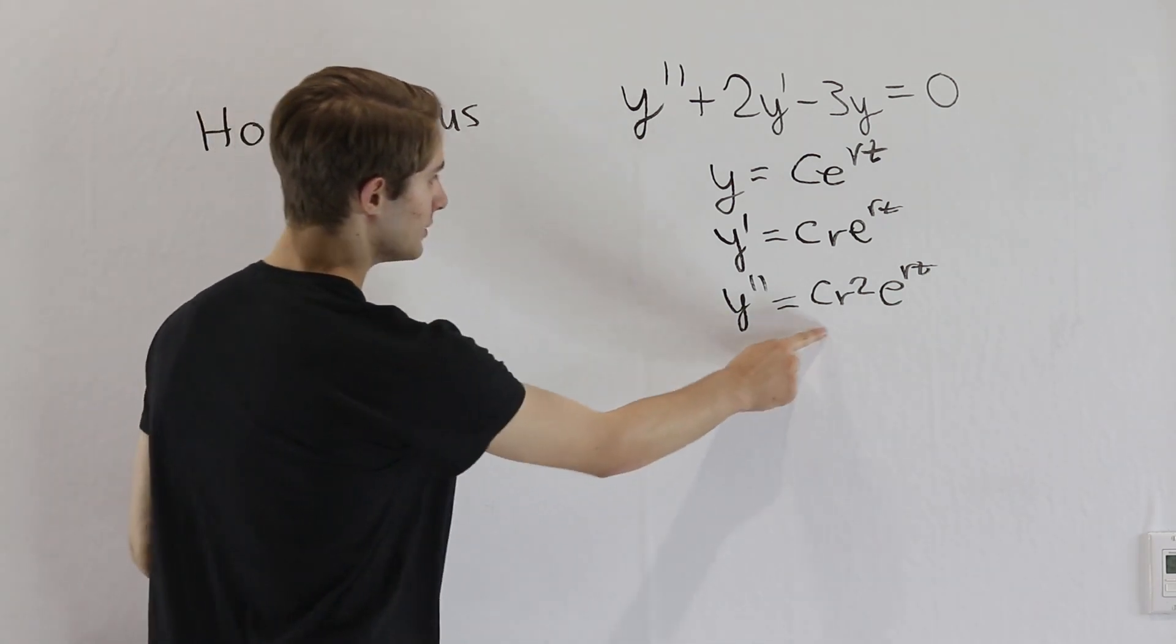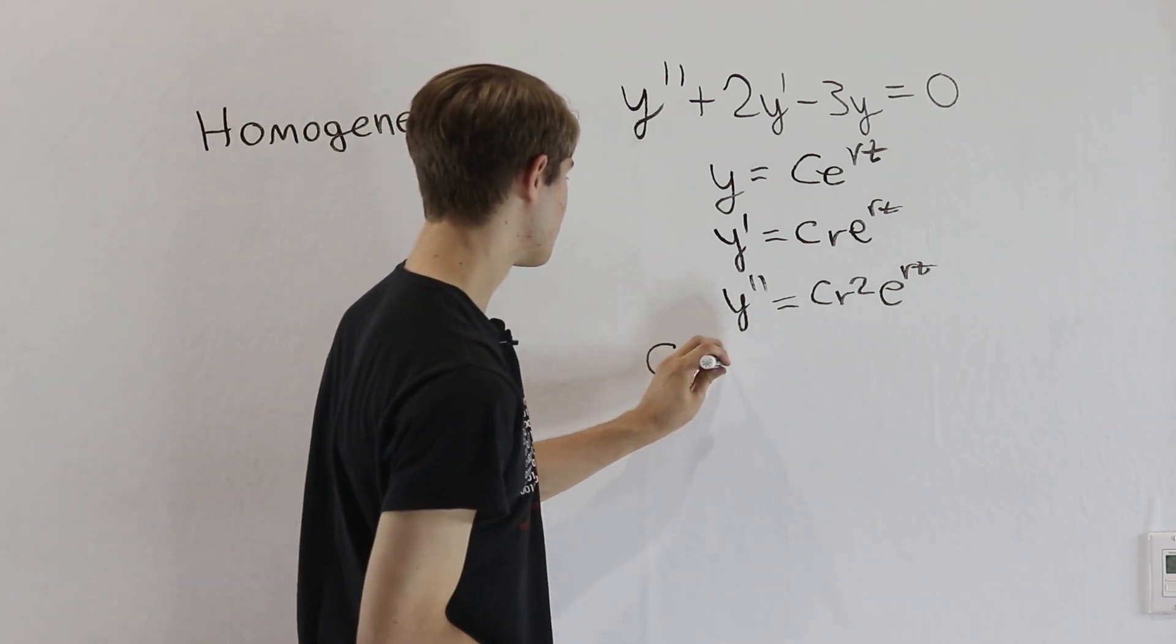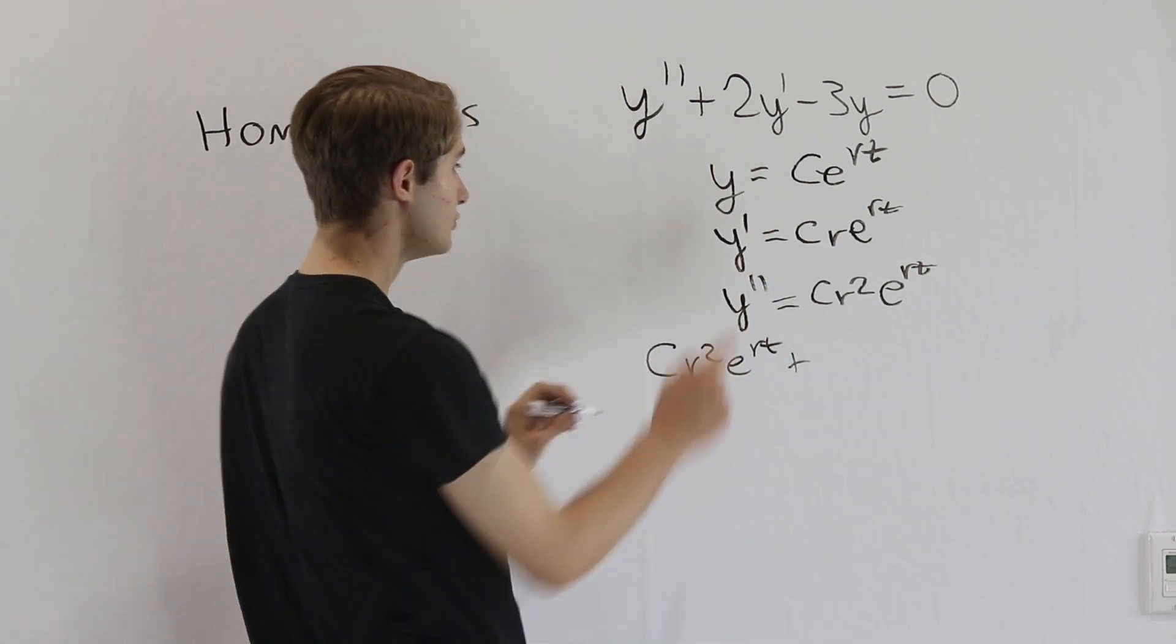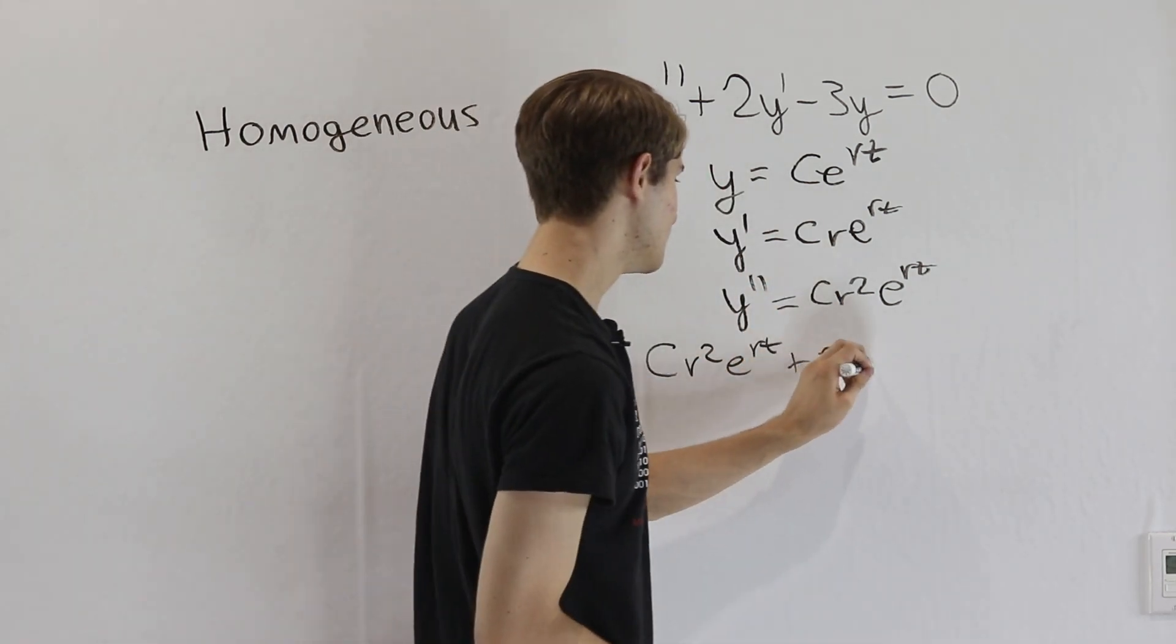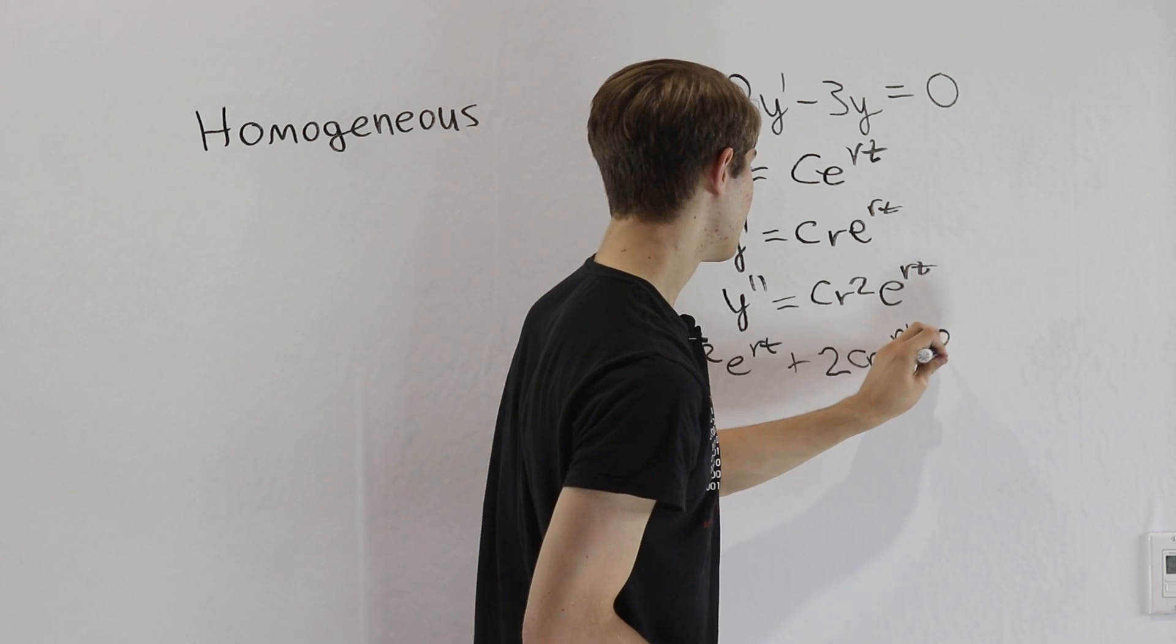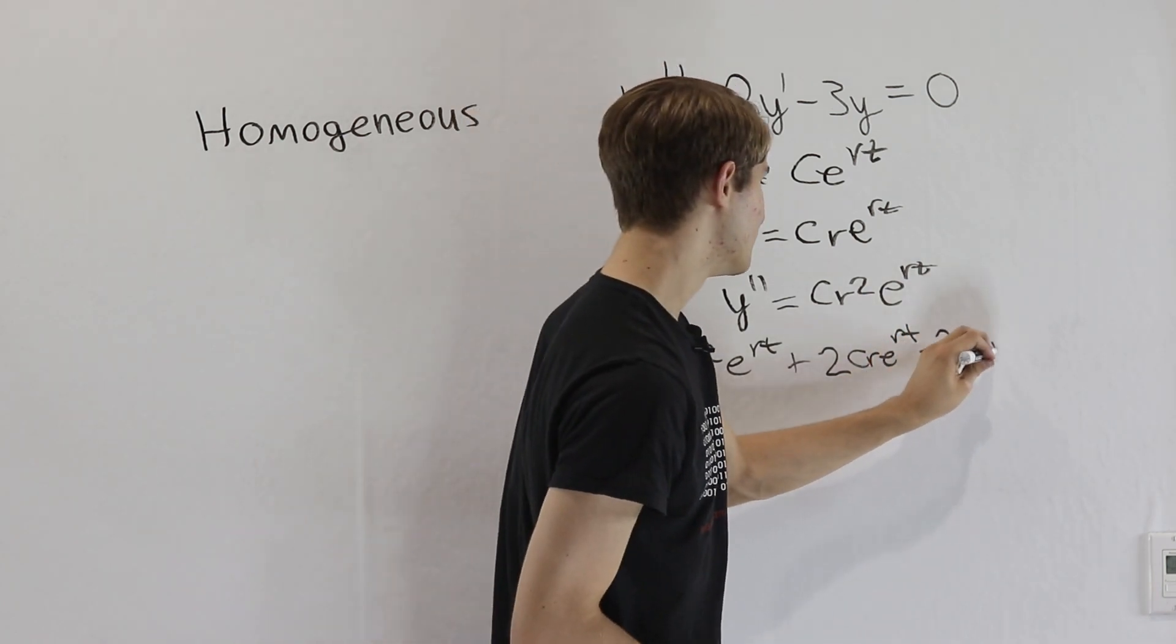Well, first of all, for y double prime, we know that's going to be c r squared e to the rt. Then plus 2 times y prime is c r e to the rt minus 3 y is c e to the rt.